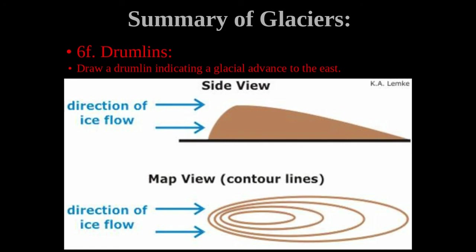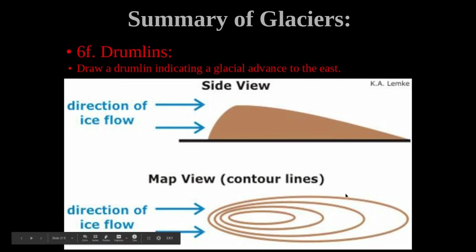As the glacier advances, sediments begin to build up almost like a wall on the steep side — possibly catching on a large boulder. As the glacier moves forward, material stacks up on the steep side and tapers off on the other side, creating the gentle slope. This teardrop shape points in the direction that the glacier was advancing.